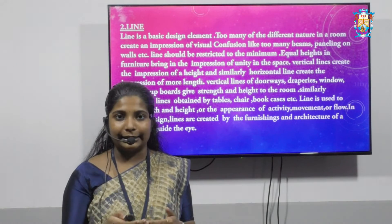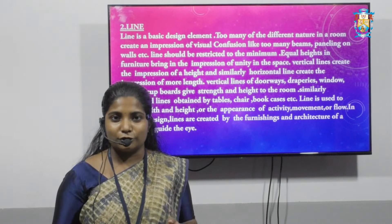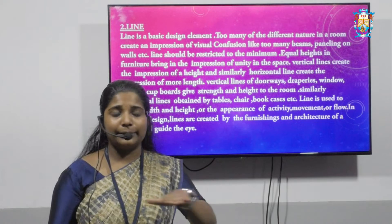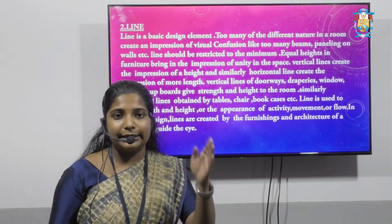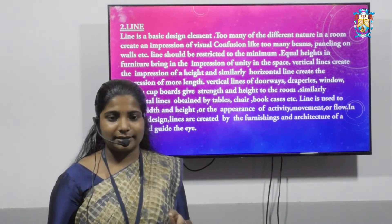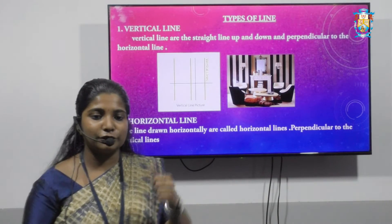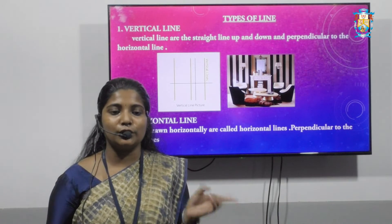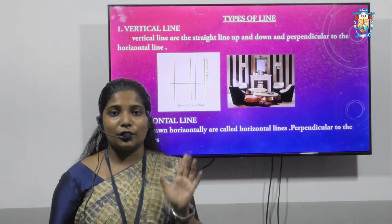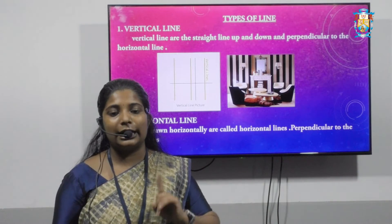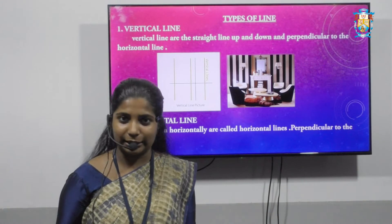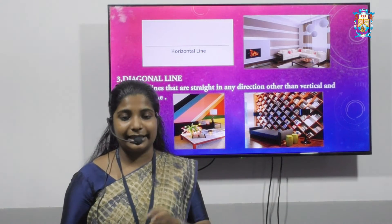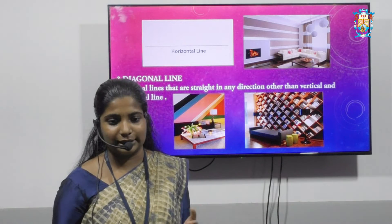Now let's see the types of lines. The first type is the vertical line — a straight line going up and down, perpendicular to the horizontal line. The second is the horizontal line — a line drawn horizontally, perpendicular to the vertical line. The third is the diagonal line — a straight line going in any direction other than vertical or horizontal.